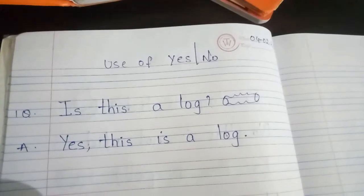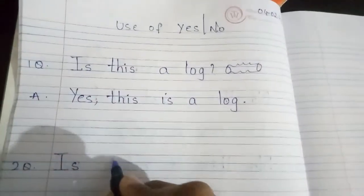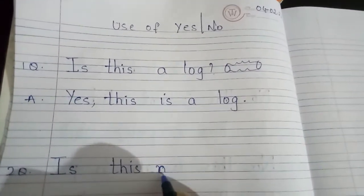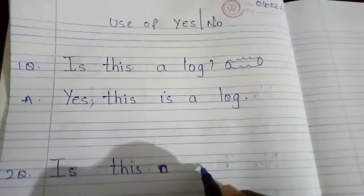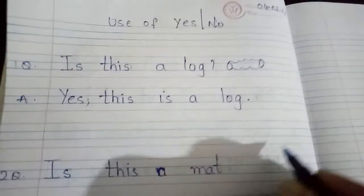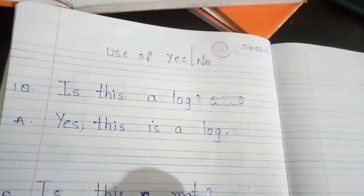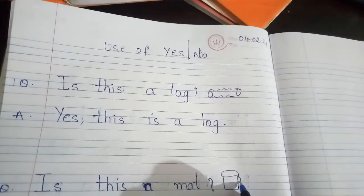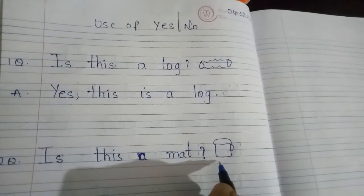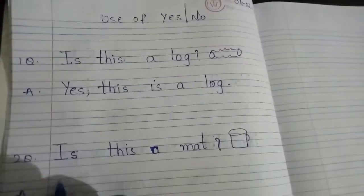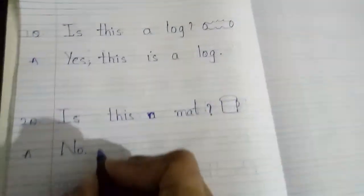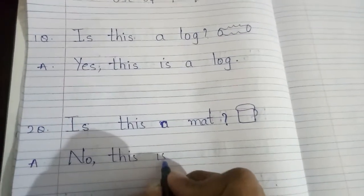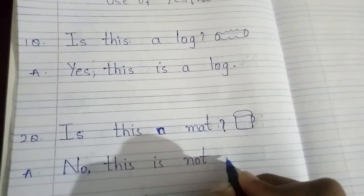Second question: Is this a mat? You should keep a question mark. Now look at the picture — is this a mat? No, this is not a mat. This is a cup. So write 'No, this is not a mat.'